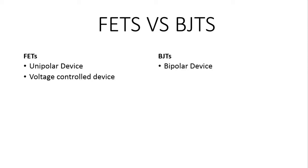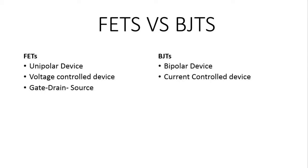We will explain in a few minutes why it is a voltage control device, whereas the BJT was a current control device where the input current IB used to control the output current. The FET has three terminals: gate, drain, and source. The BJT also has three terminals: base, collector, and emitter.